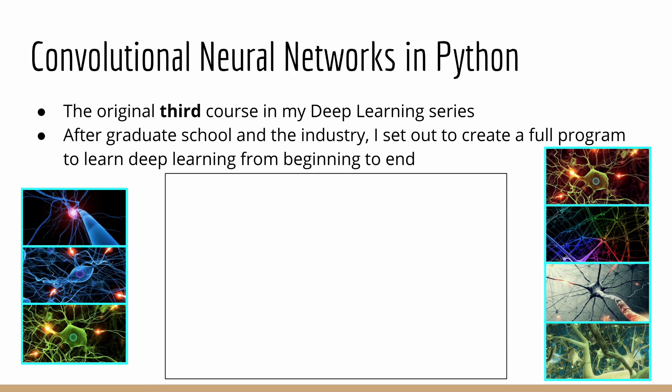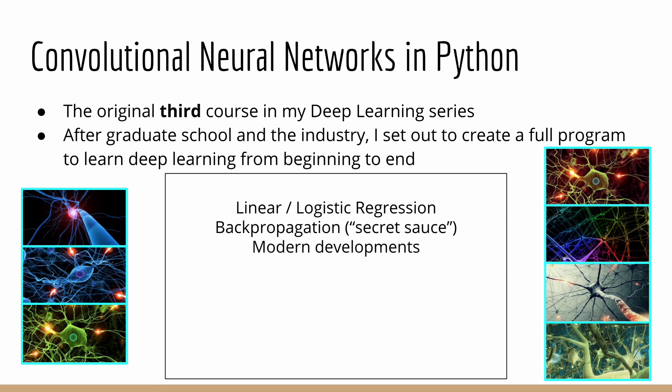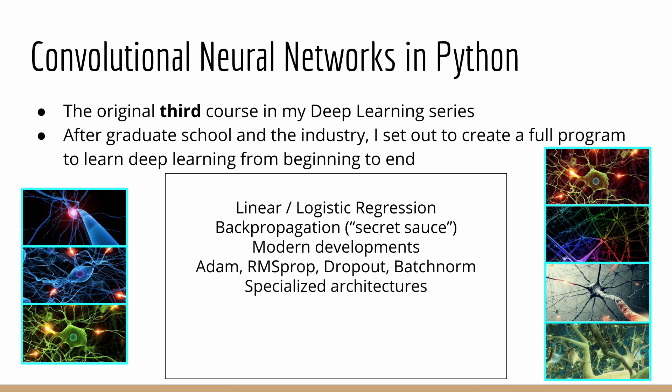It started with basic courses on linear and logistic regression, which we in deep learning refer to as the neuron. From there we learned backpropagation, the secret sauce behind how neural networks learn. Then we learned about modern developments in neural network training such as momentum, Adam, RMSprop, dropout, and batch normalization. That brings us to where you are now: new deep learning architectures. Specialized architectures help neural networks perform even better on specific kinds of datasets.